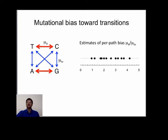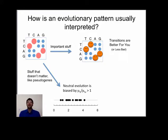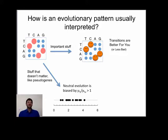In most organisms there's a per-path bias in mutation favoring transitions; often this bias is from two to four. When evolution favors one type of change over another, we tend to see two kinds of explanations: one proposing that for changes in features we consider important, the more frequent change must be better on average, but it's also widely accepted that for unimportant features, neutral evolution can be biased by mutation.